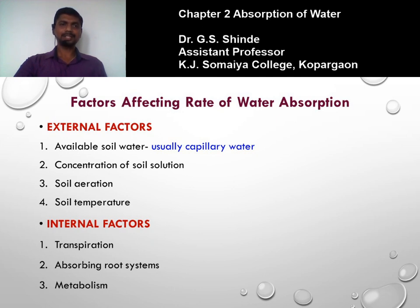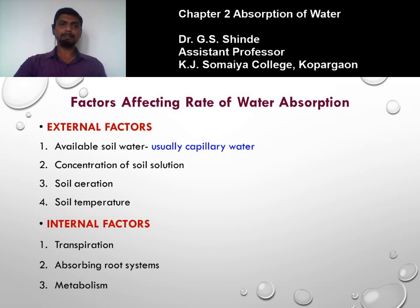The second internal factor is the absorbing root system. The amount of water absorption directly depends on the root system — specifically the number of root hairs, which determines the rate of absorption. In moist soil conditions, more root hairs are developed, which absorb the required and sufficient amount of water. So if the root system possesses more root hairs, the root is able to absorb sufficient water.